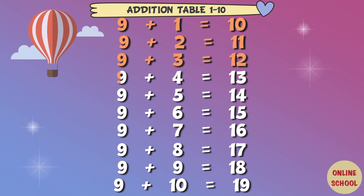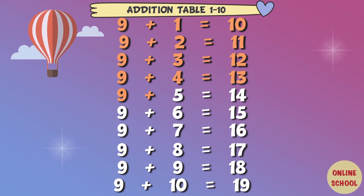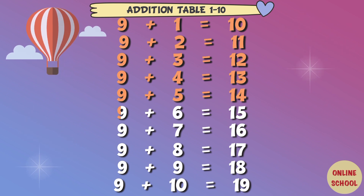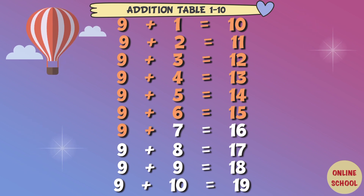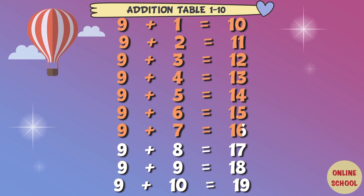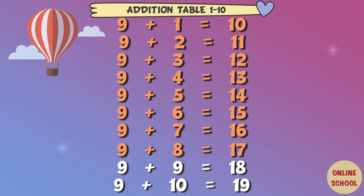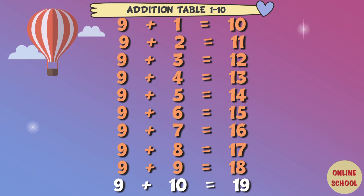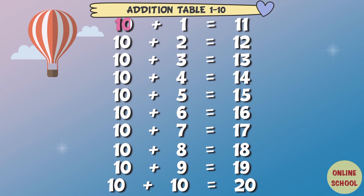Table 9: 9 plus 1 equal 10, 9 plus 2 equal 11, 9 plus 3 equal 12, 9 plus 4 equal 13, 9 plus 5 equal 14, 9 plus 6 equal 15, 9 plus 7 equal 16, 9 plus 8 equals 17, 9 plus 9 equal 18, 9 plus 10 equal 19.